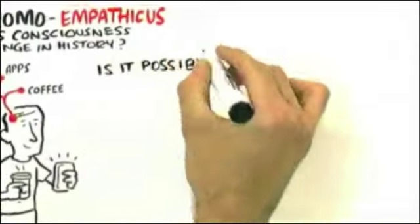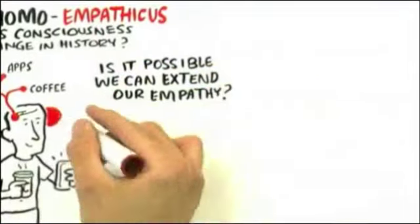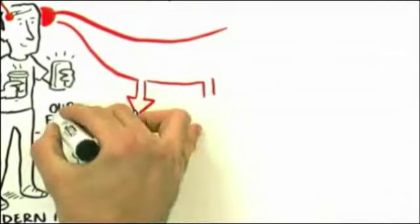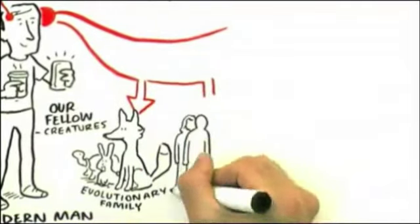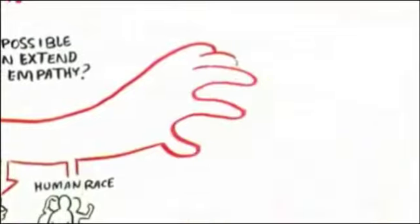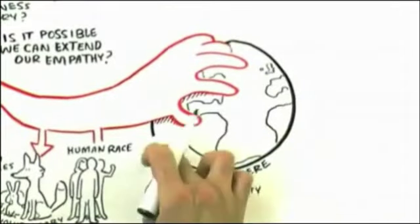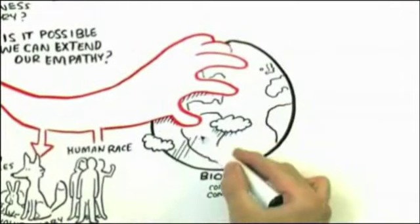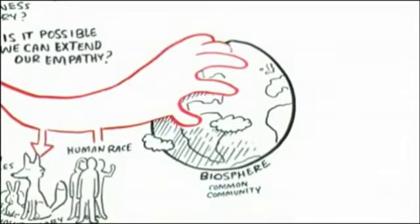Is it possible we could actually extend our empathy to the entire human race as an extended family? And to our fellow creatures as part of our evolutionary family? And to the biosphere as our common community? If it's possible to imagine that, then we may be able to save our species and save lives.